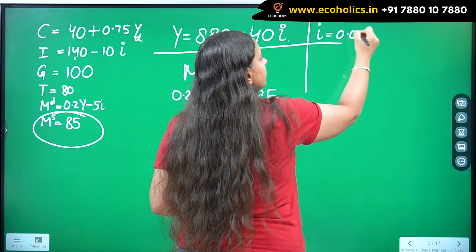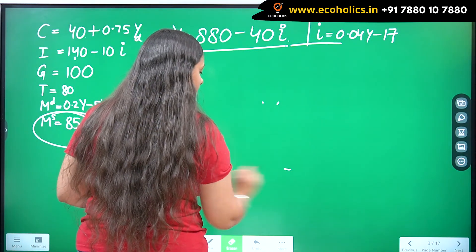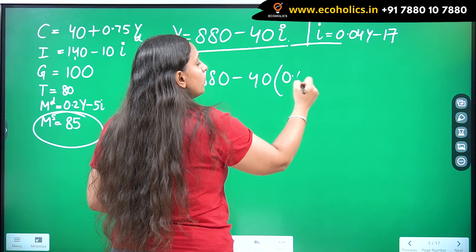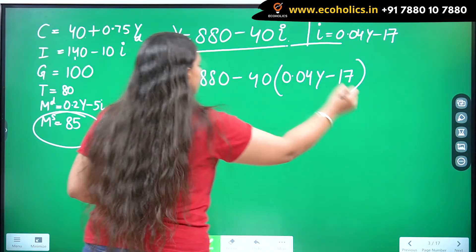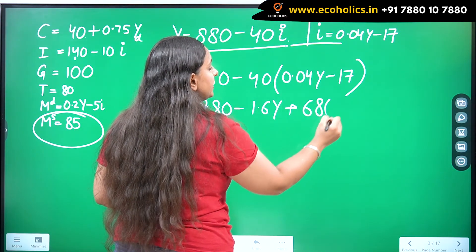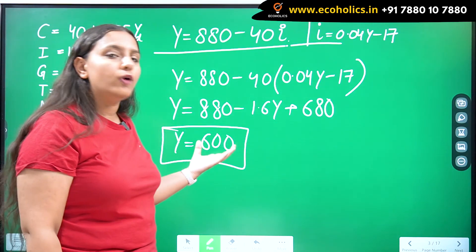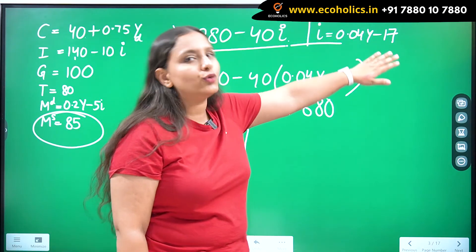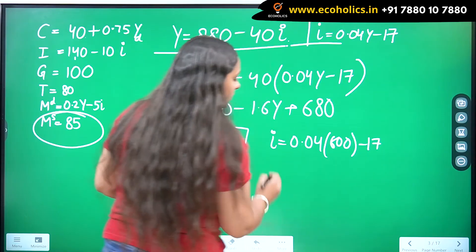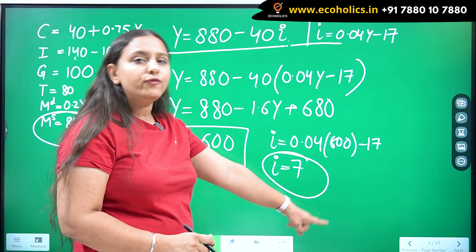Substituting the LM equation i = 0.04Y − 17 into the IS equation: Y = 880 − 40(0.04Y − 17) = 880 − 1.6Y + 680. Solving: Y + 1.6Y = 1560, so 2.6Y = 1560, giving Y = 600. This is the equilibrium level of output. Substituting Y = 600 into the LM equation: i = 0.04(600) − 17 = 24 − 17 = 7. So the equilibrium interest rate is i = 7.